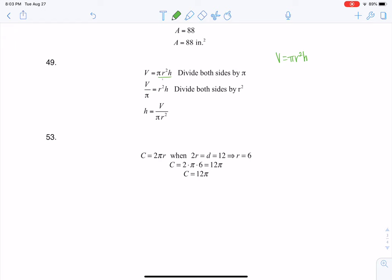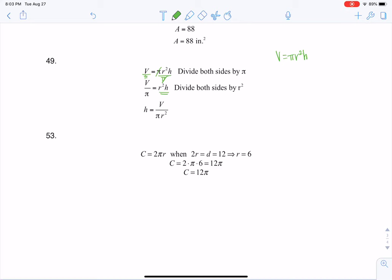So if I divide both sides of this equation by pi initially, you can see that the pi's cancel out here, and I'm left on the right side with R squared H, and then I have V over pi on the left side. And that's all fine and good.